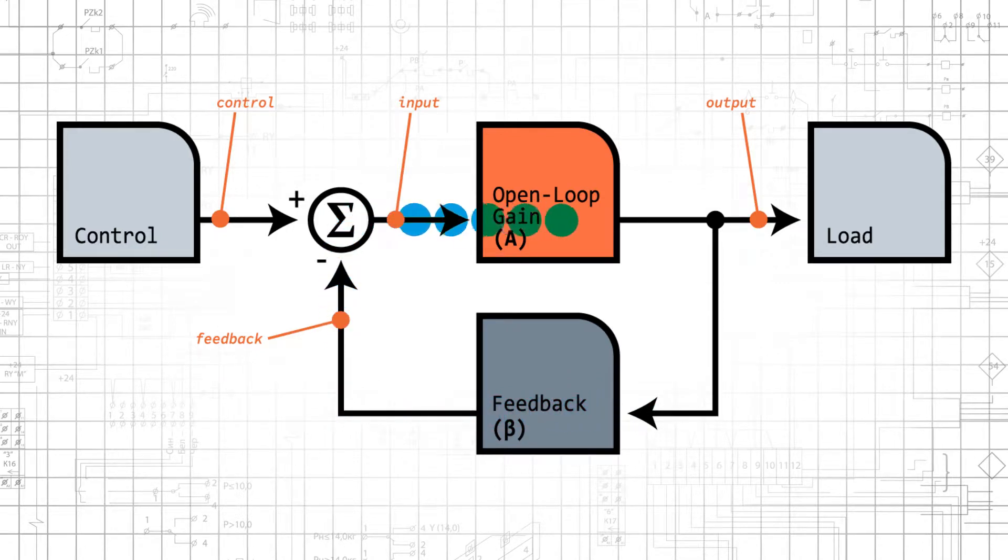We create negative feedback by taking the output and combining it with the input signal via subtraction. This simple technique transforms an op-amp into an easy-to-use, versatile component that is more consistent with its idealized model.